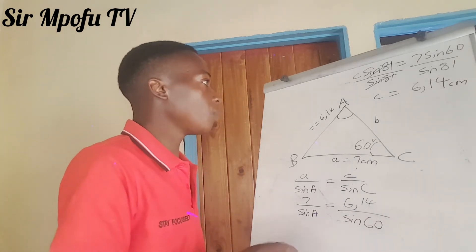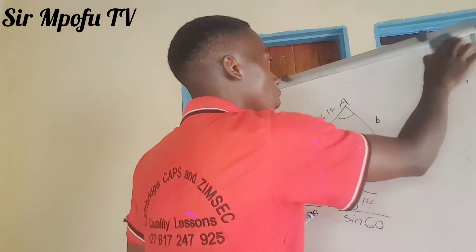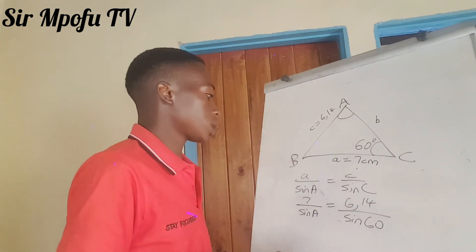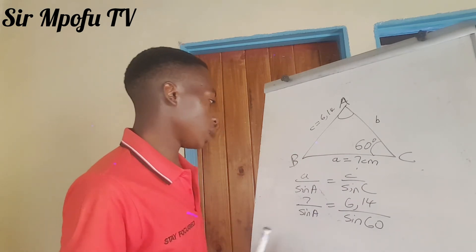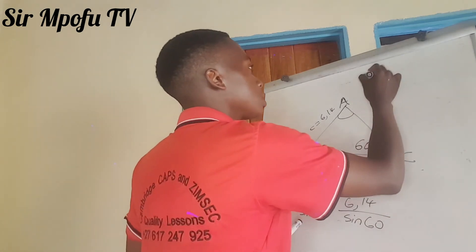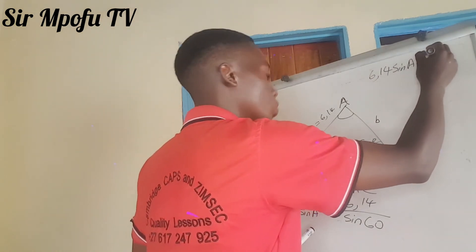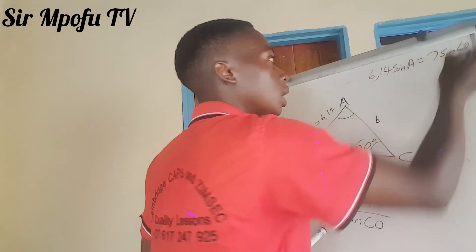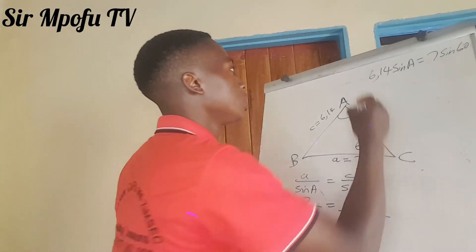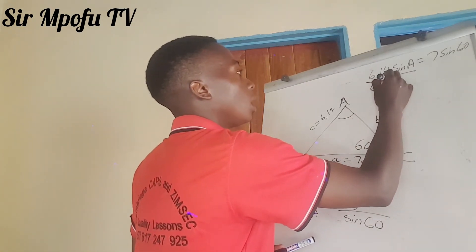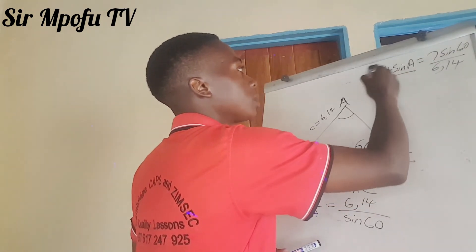That's our angle C. We're going to do the same thing — cross multiply. If we cross multiply, we are going to end up with 6.14 times sine A equals 7 times sine 60. Then, to get the value of sine A, we are going to divide both sides by 6.14, and also the right side by 6.14. This will cancel out, so sine A equals...